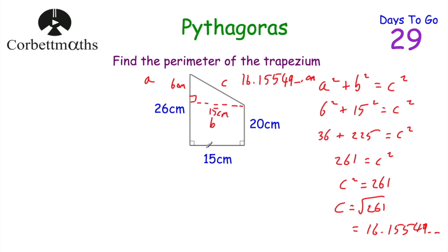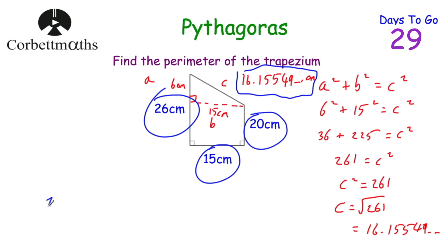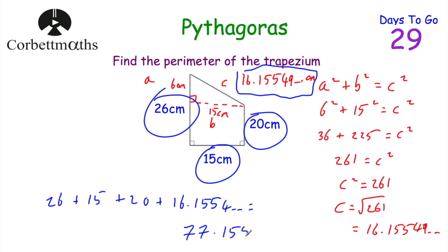Now we add up all the side lengths to find the perimeter: 26 plus 15 plus 20 plus 16.1554... equals 77.1554... centimetres. Rounding to two decimal places, the perimeter is 77.16 centimetres.